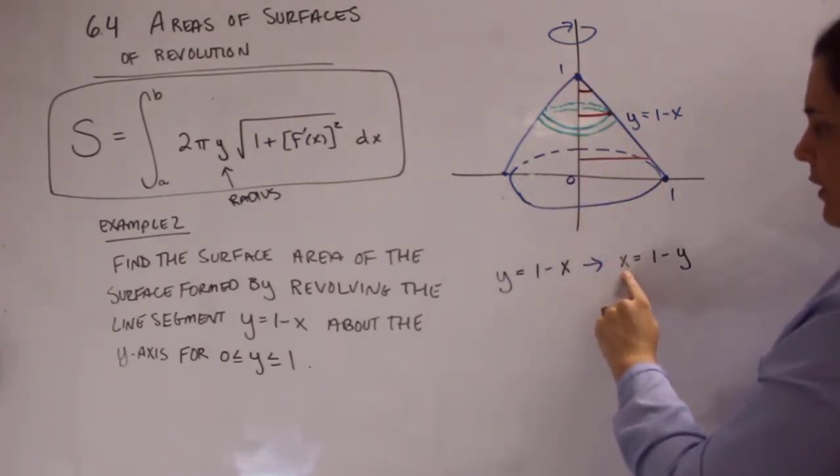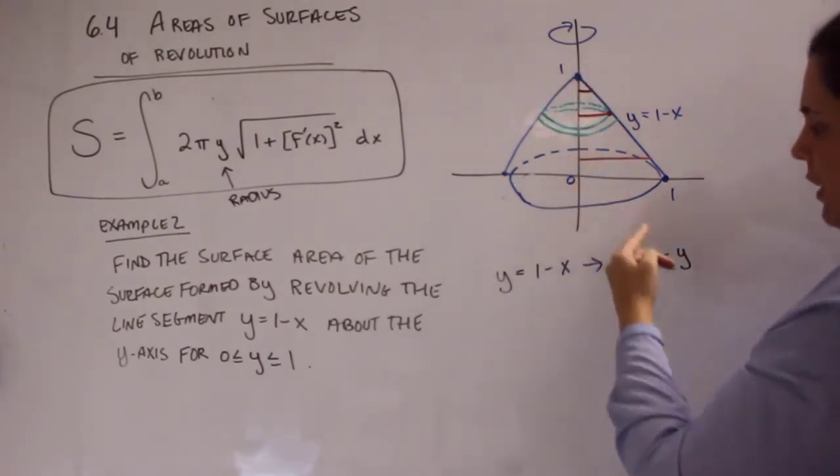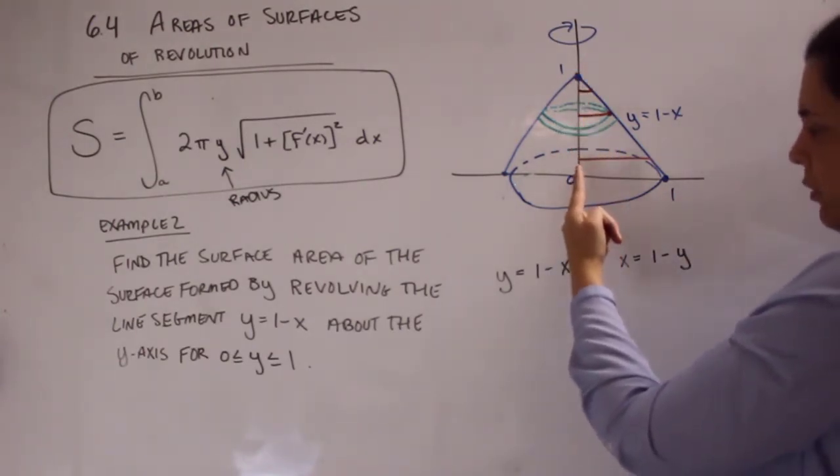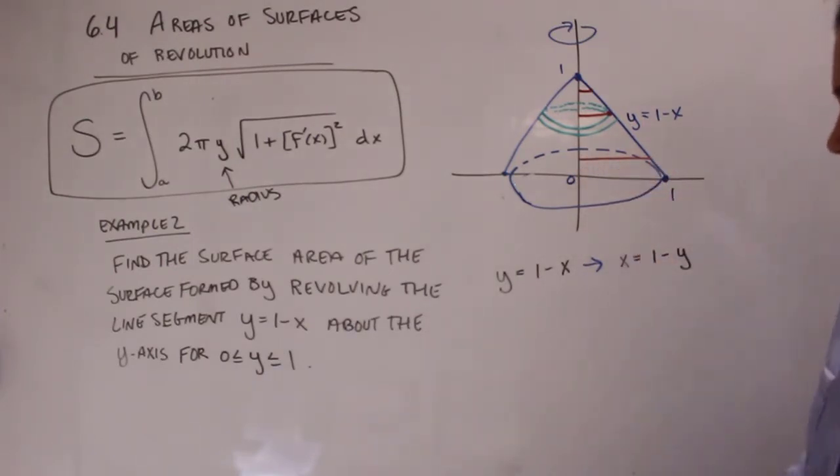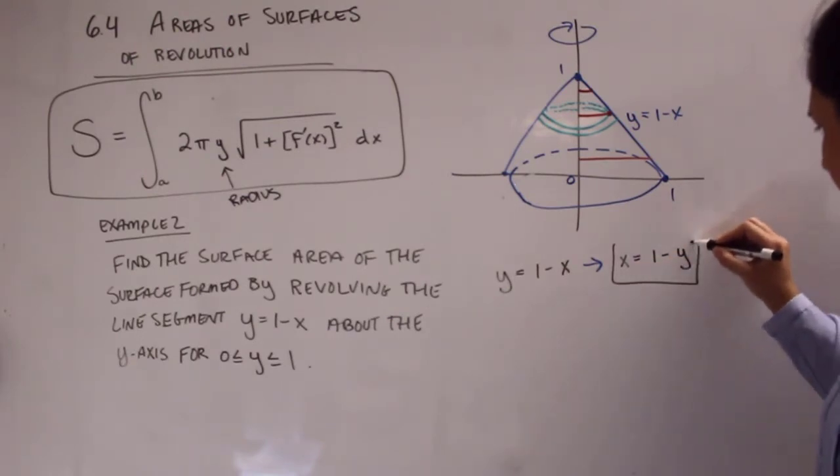So we just rewrote this line in terms of x. And then that's going to tell us our radius based on our different y values. So somewhere along this y axis, we could pick a y value, and we can know its corresponding x value. So that's going to represent our radius. So that's one thing we needed. I'm going to go ahead and box that in.